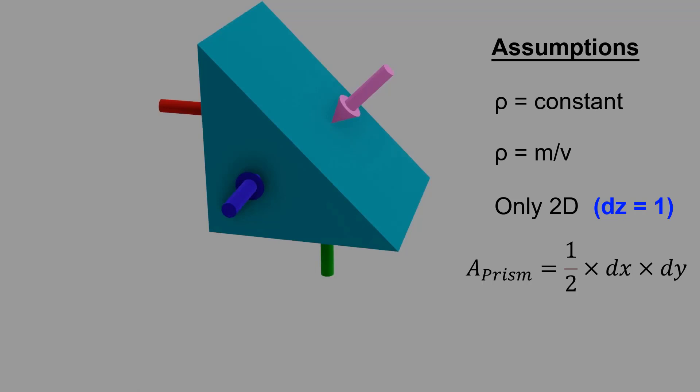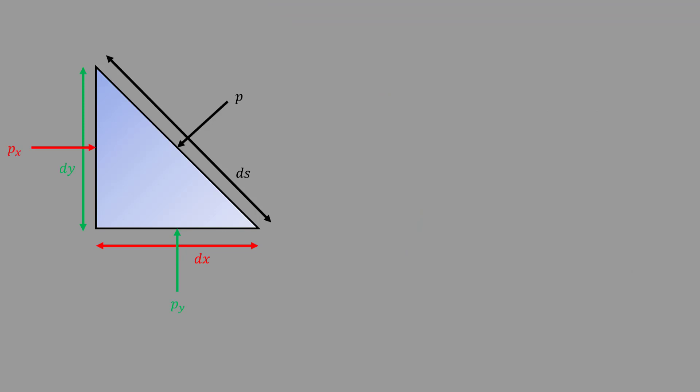Volume of the prism is given as V prism equals A prism dz. For simplicity, let us switch to the 2D view of the triangular prism. Also, we shall indicate the weight of the prism through the center of mass or the centroid.